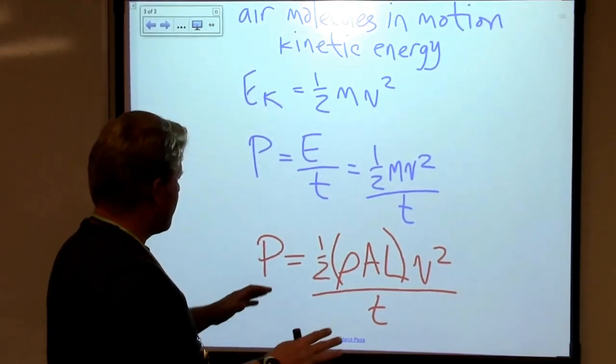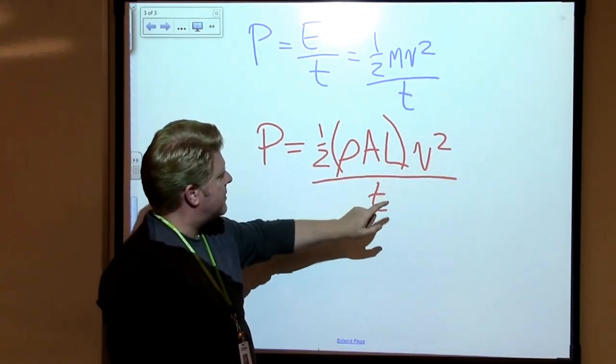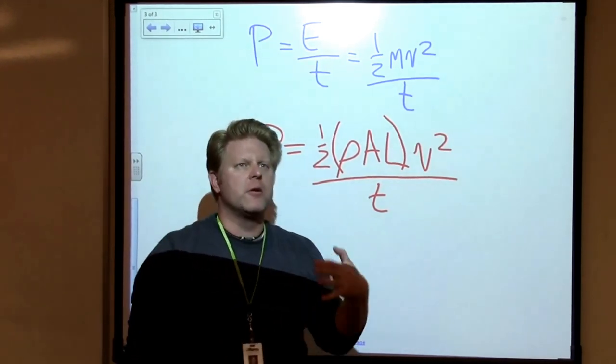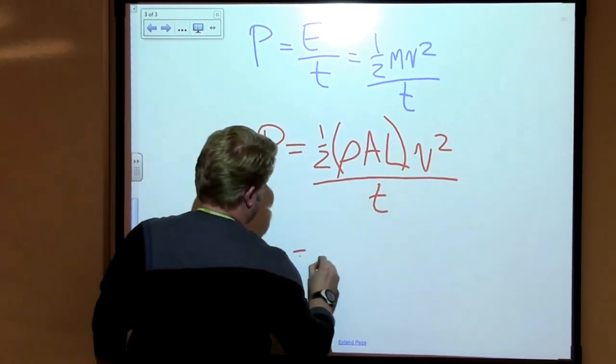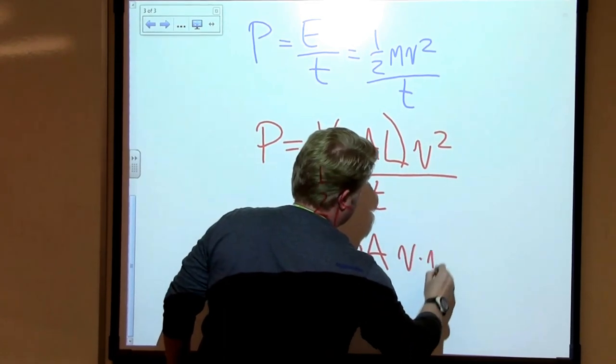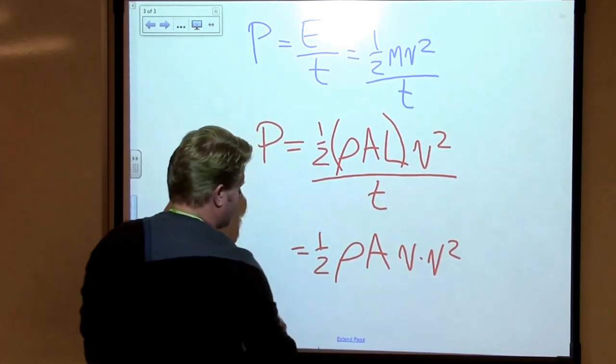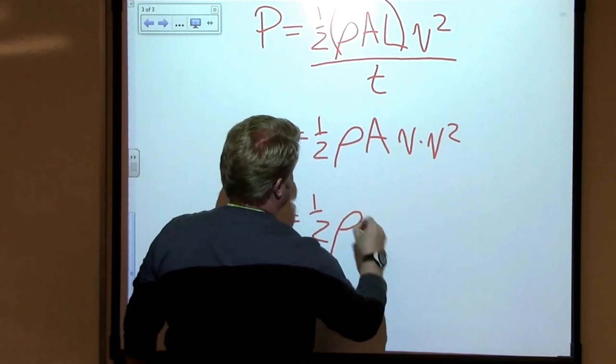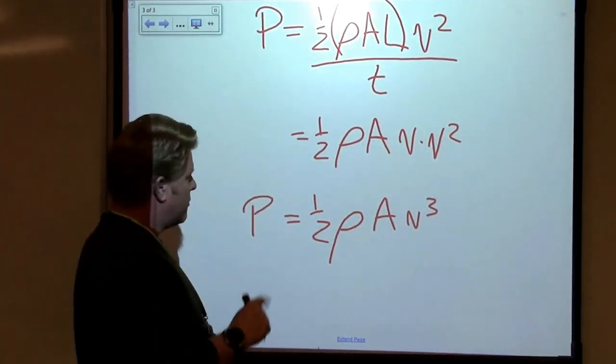Well, if I look at this, I recognize that a length per unit time, a mile per hour, a meter per second, the length per unit time, well, that's also a velocity. So I can rewrite that as one half the density times the area times the length divided by time, which is a velocity times this other velocity, which allows me to say that the power is equal to one half times the density times the area times the cube of the velocity. We're almost there.